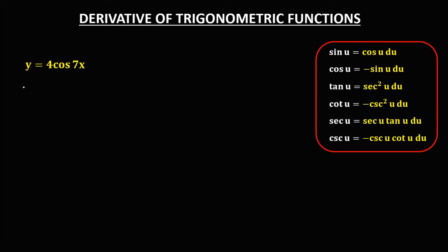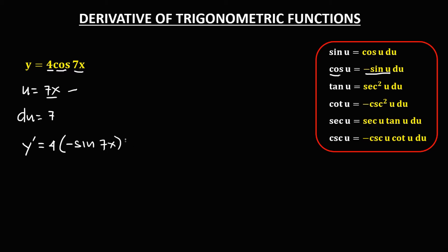Then for this given, so u is equal to 7x, and for the derivative of u, so derivative of 7x, that's 7. So to find now the derivative, just bring down this number, so 4 times the derivative of cosine, that's negative sine u, so negative sine 7x times the derivative of u, that's 7.